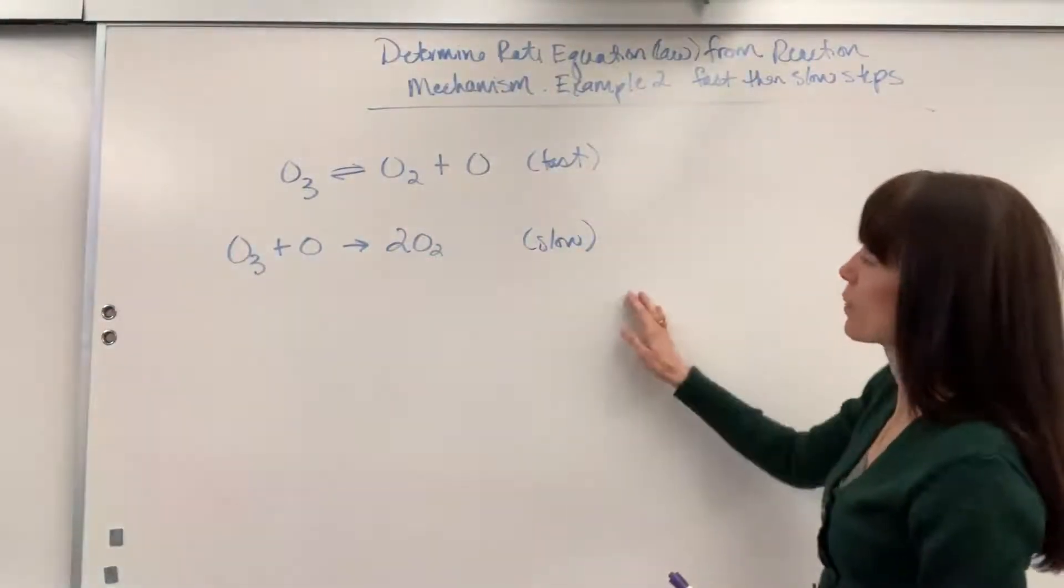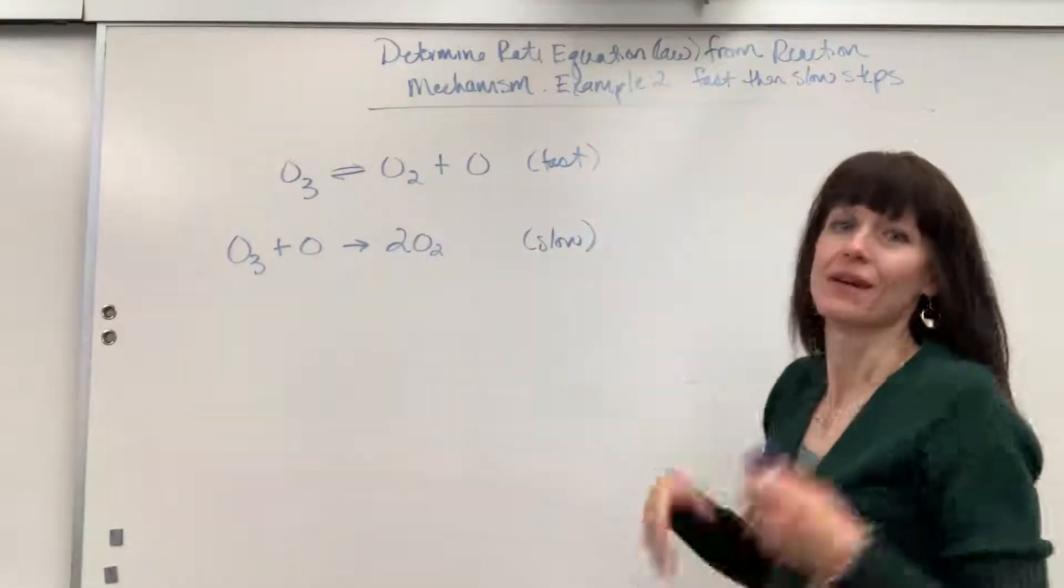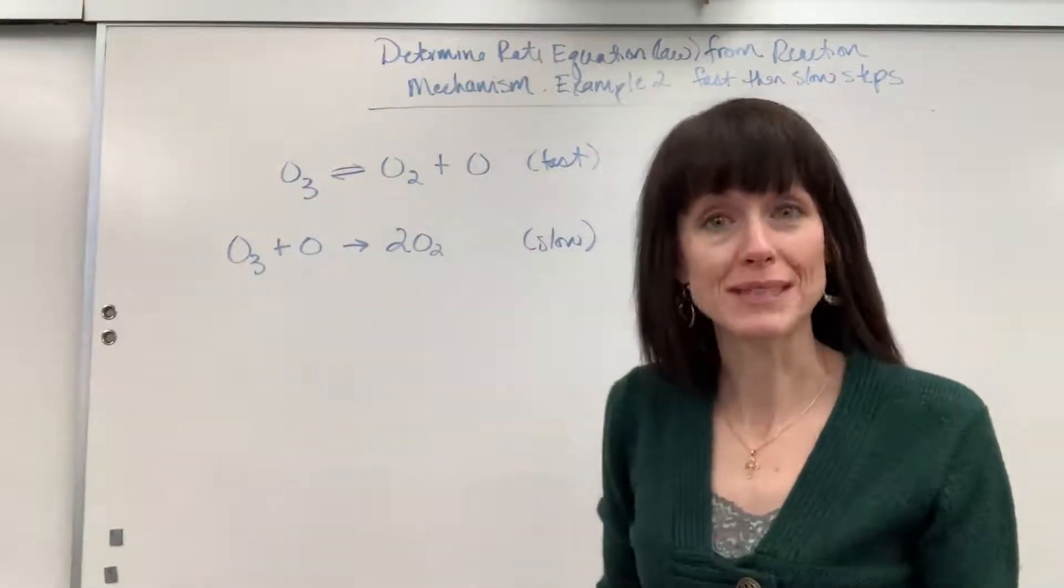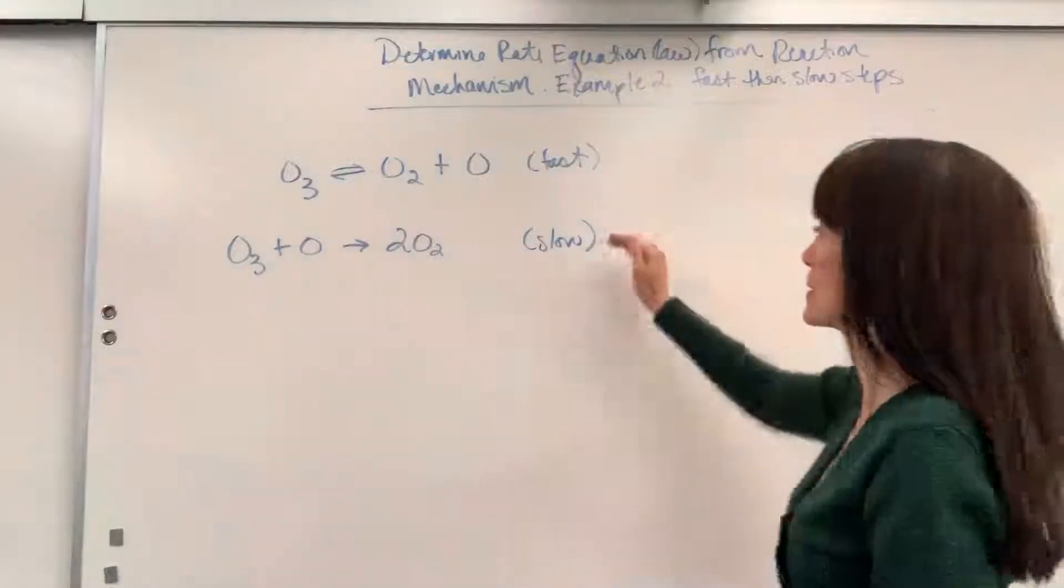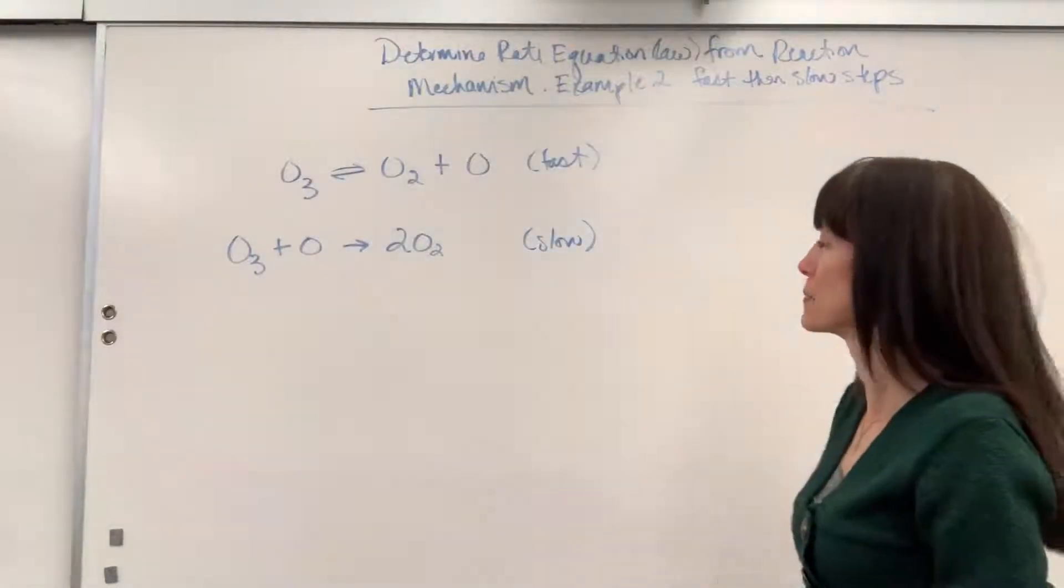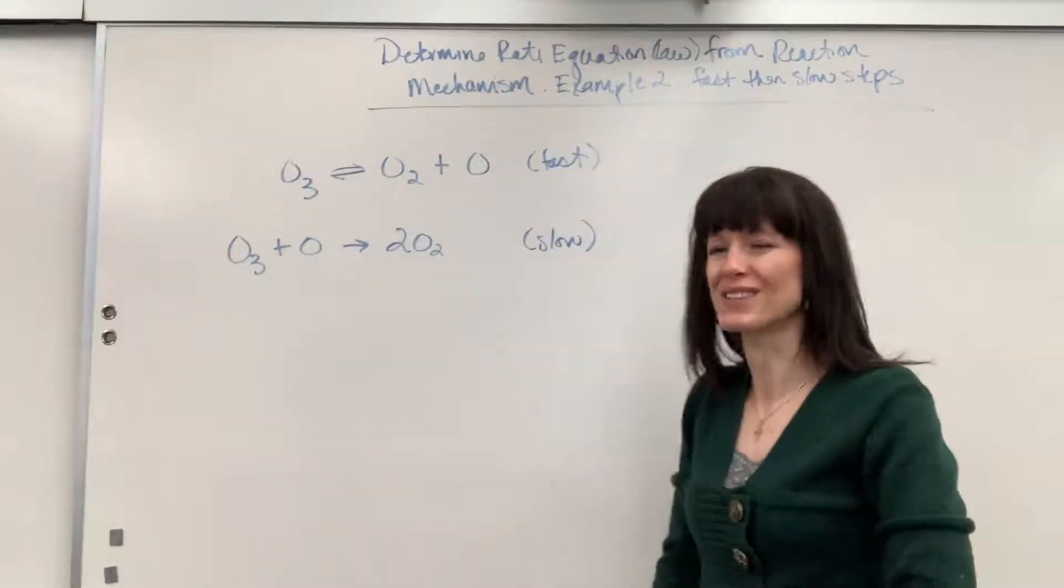So here's our question. You can see we have a fast step and slow step. You might be asked, what's the rate determining step? Easy. You always go to the slow one. There's the rate determining step, the slowest step. Can't go any faster than the slowest step.